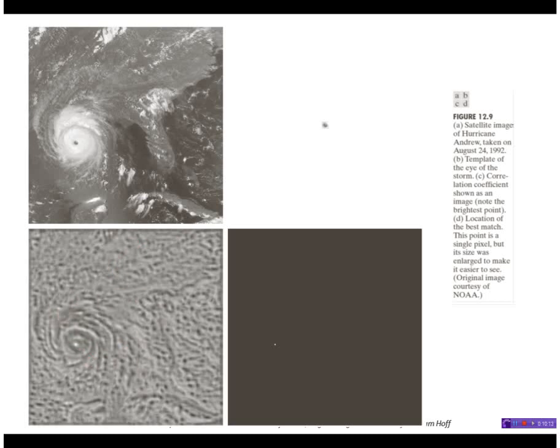This is the cross-correlation score image, and you can see it has a large score here. It has scores everywhere else, too, but the largest value is here, corresponding to the location of that patch.